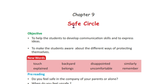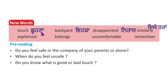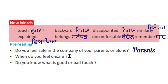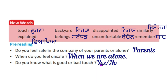Chapter 9: Safe Circle. Surakhyat Kera. New words: Touch – Chhoona, Backyard – Beda, Disappointed – Nirash, Similarly – Isse Tara, Explained – Vyakhya, Belongs – Sambandat, Uncomfortable – Bechan, Remember – Yaad. Pre-reading questions: Do you feel safe in the company of your parents or alone? Ki tu si aapne maata pita de naal zyada surakhyat mehsous kar de ho? When do you feel unsafe? Do you know what is good or bad touch?